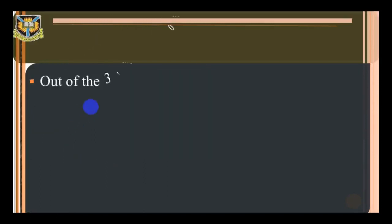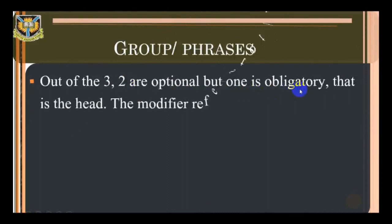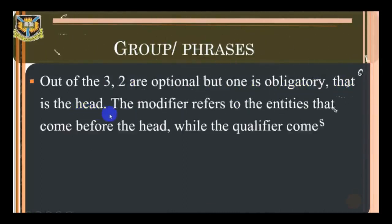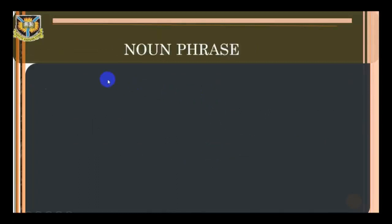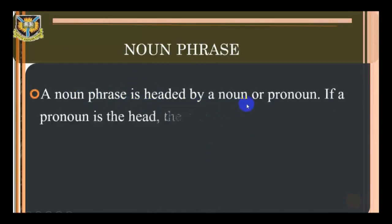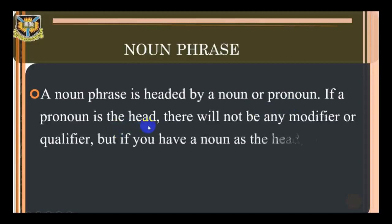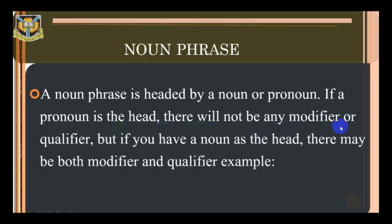Out of the three parts of a phrase — modifier, head, and qualifier — two are optional but one is obligatory, and that is the head. The modifier refers to the entities that come before the head, while the qualifier comes after the head and is sometimes called post-modifier. A noun phrase is headed by a noun or pronoun. If a pronoun is the head, there will not be any modifier or qualifier. But if you have a noun as the head, there may be both modifier and qualifier.